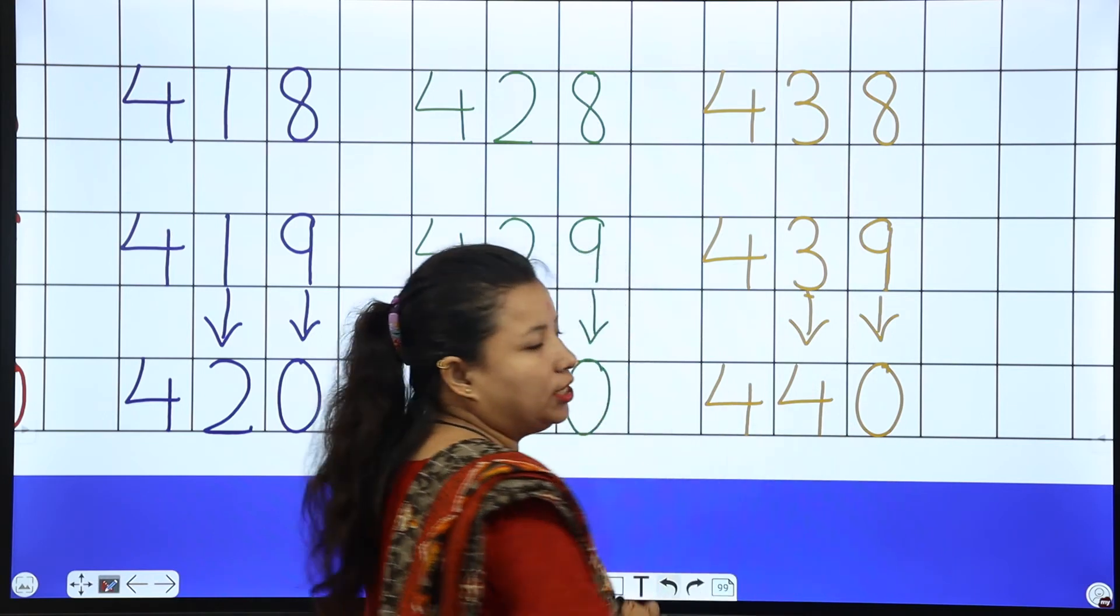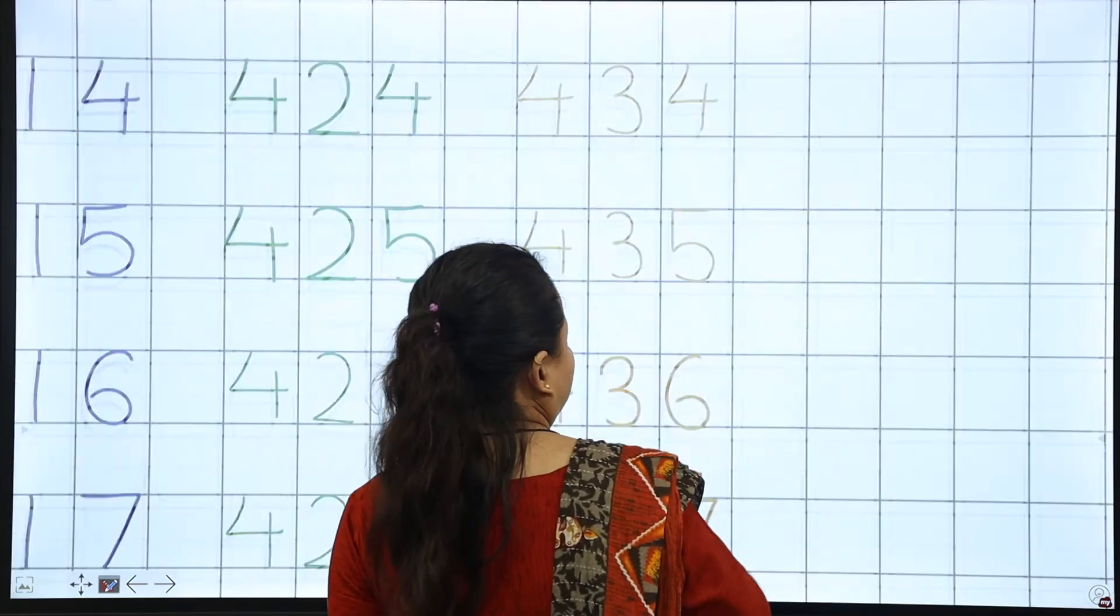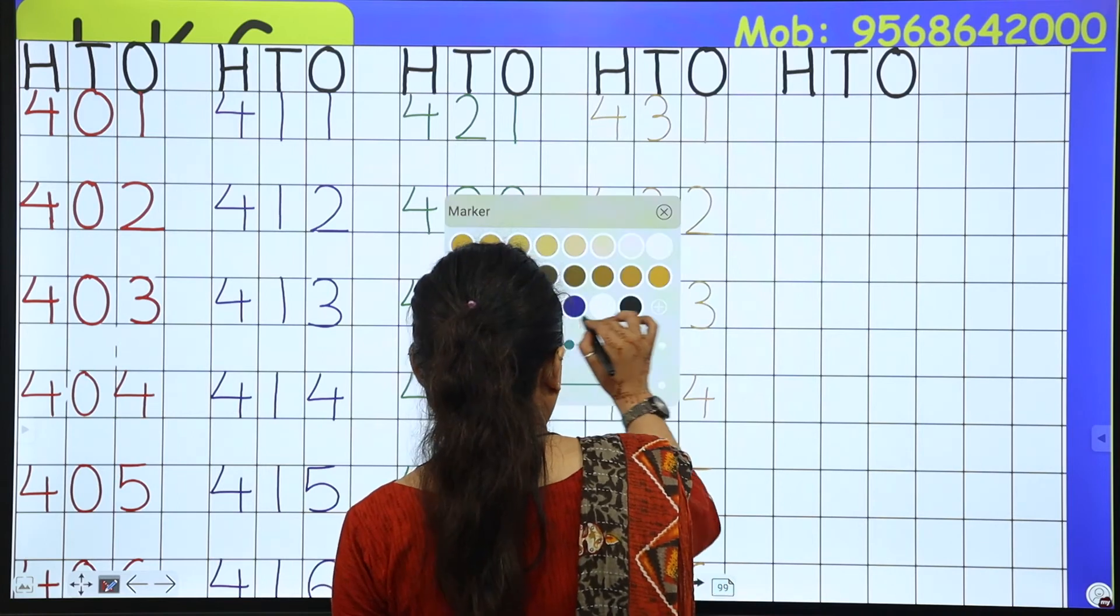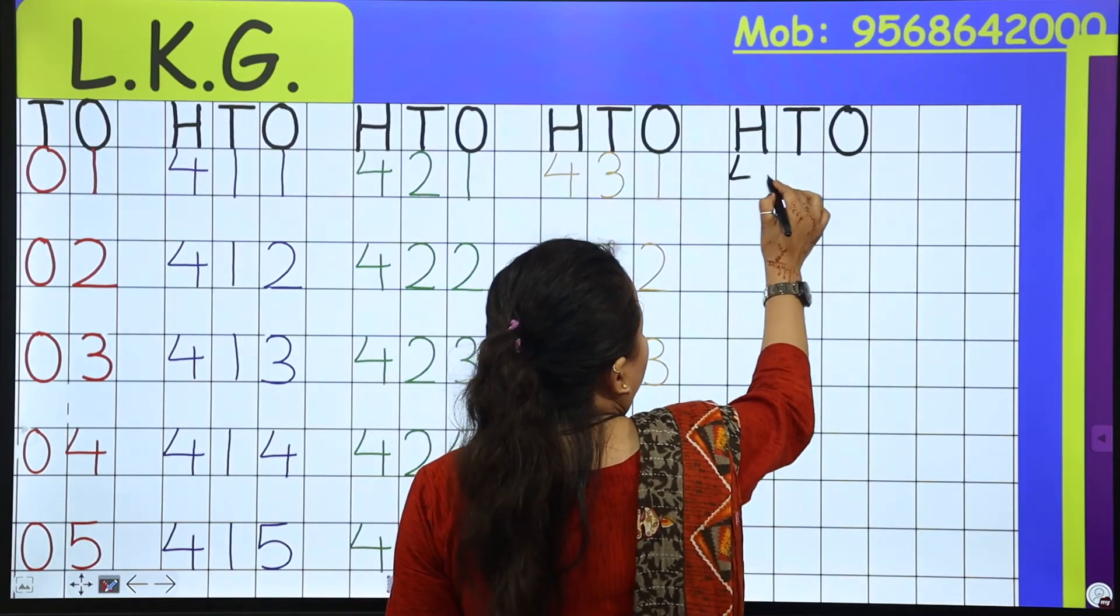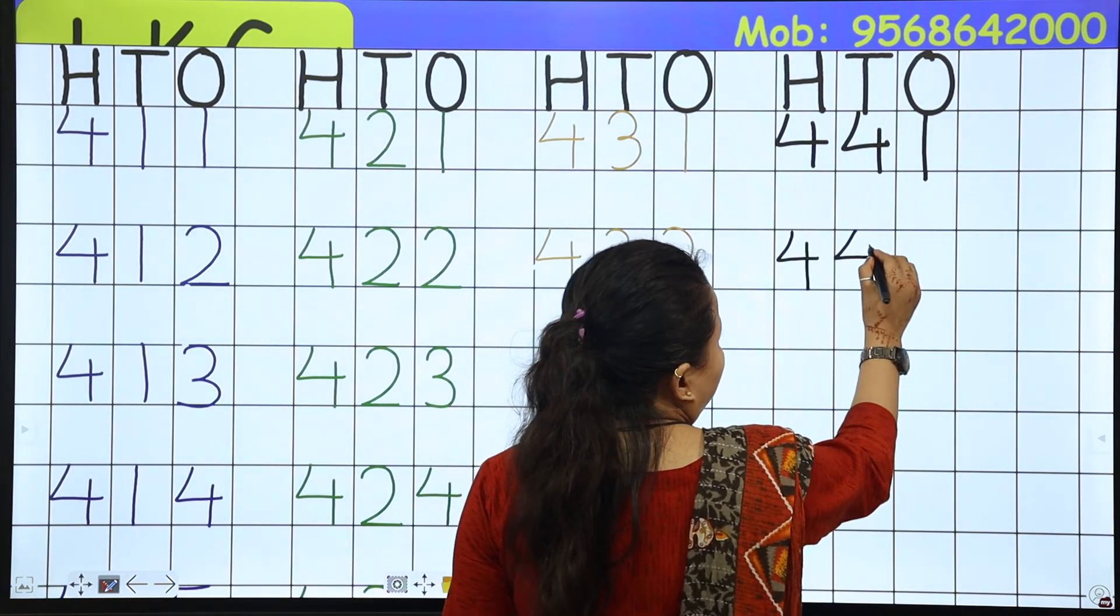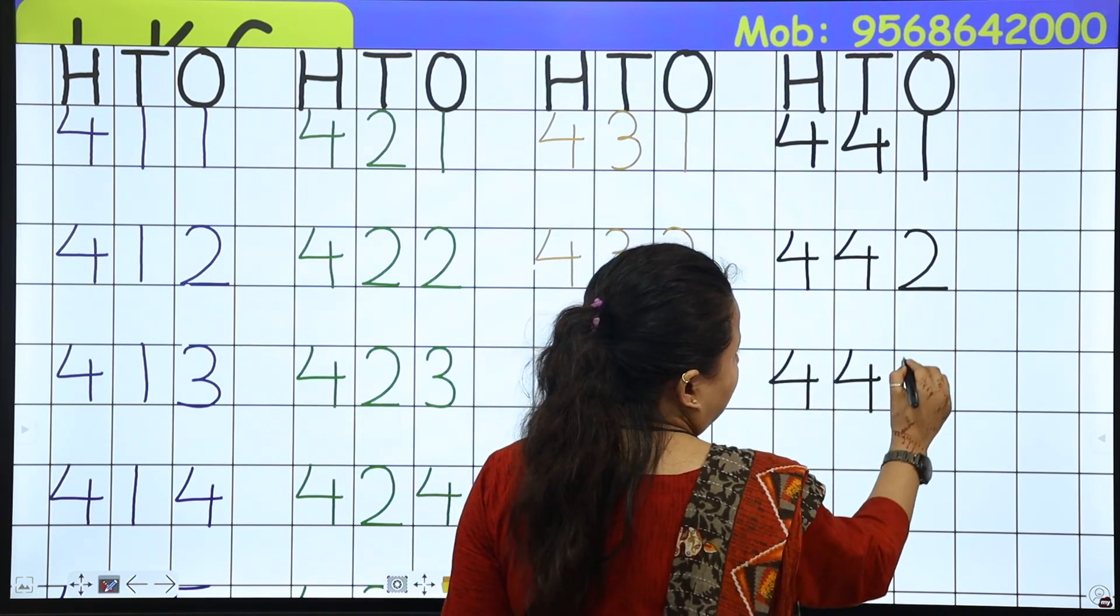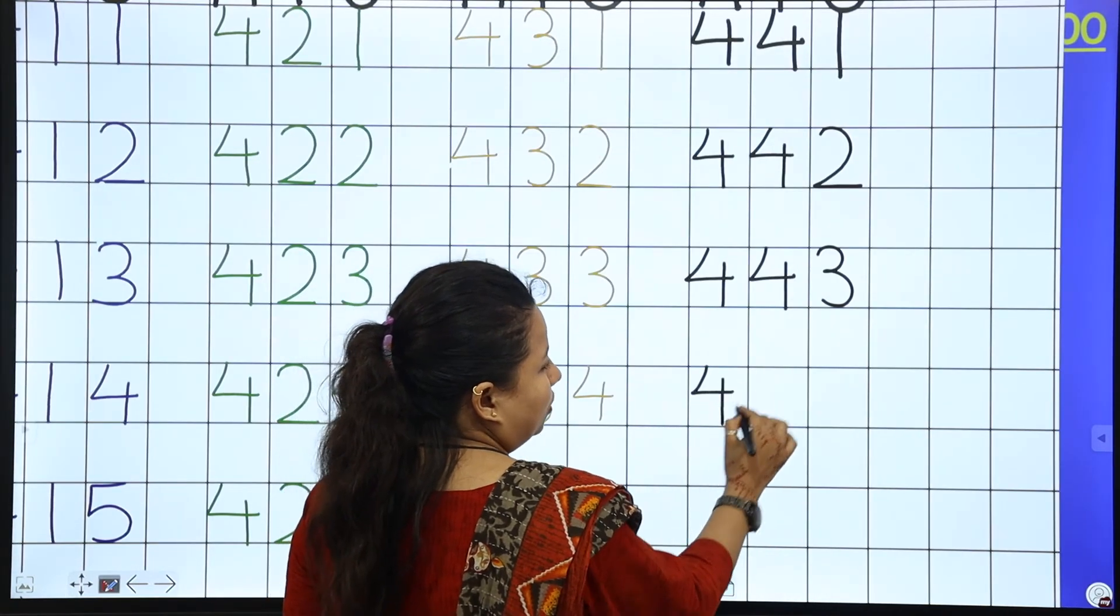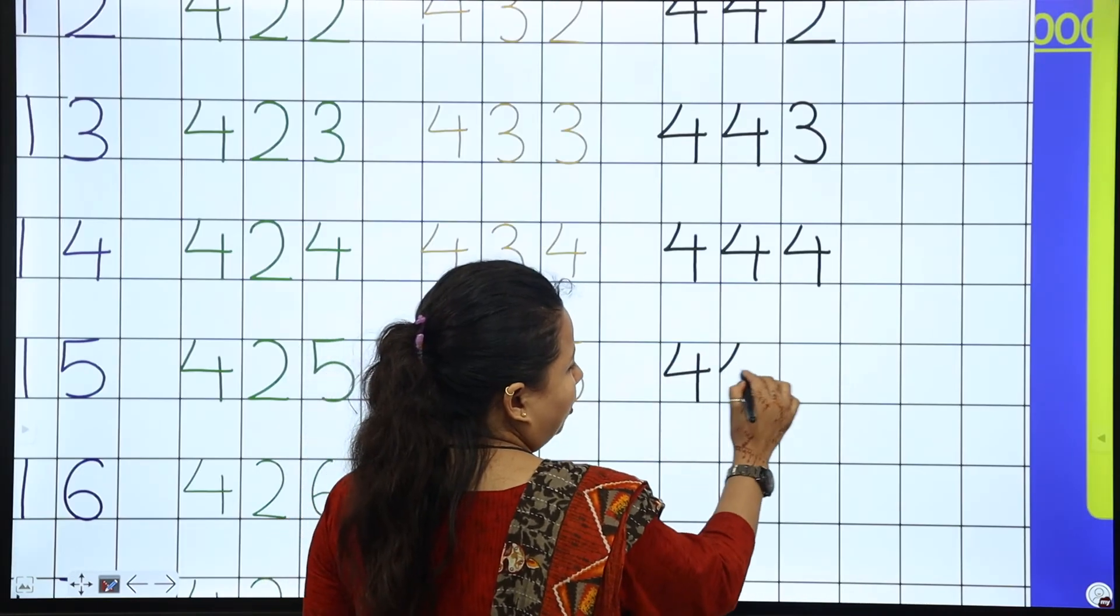440. Now next line start with 441. So 441. Next is 442, 443. Now next is 444, 445.